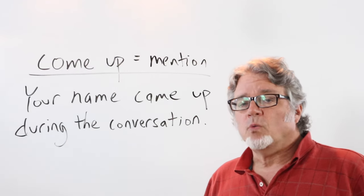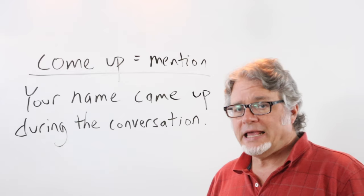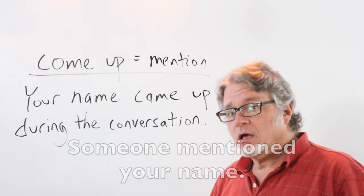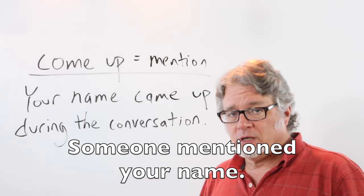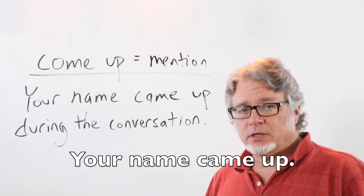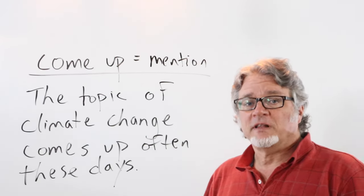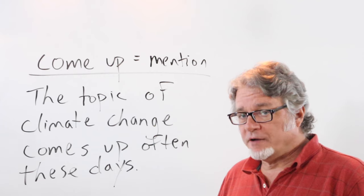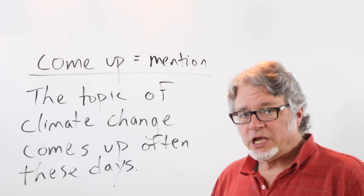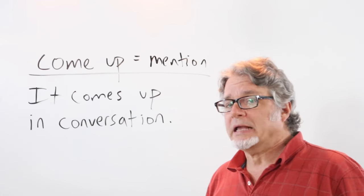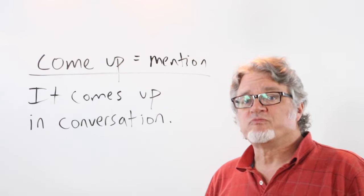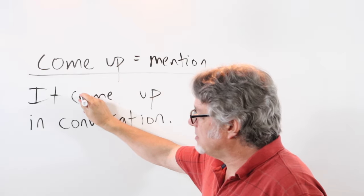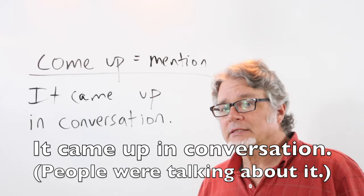Use come up when talking about mentioning a thing or a name. Your name came up during the conversation. You weren't there but someone mentioned your name. Your name came up. The topic of climate change comes up often these days because of a changing climate. You'll often hear climate or climate change mentioned. It comes up in conversation. This is in the present tense. If I put this in the past tense, then just change this to came.